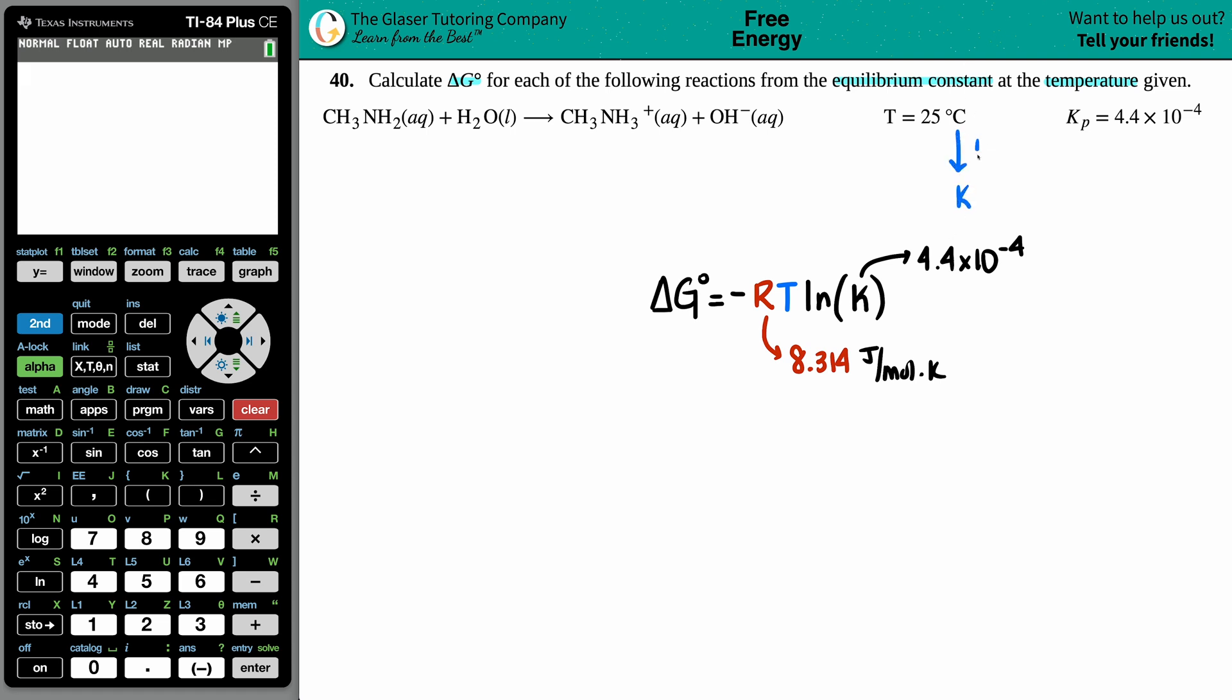Celsius to Kelvin, that's plus 273. More specifically, it's plus 273.15. So, room temp, it's like ingrained in my mind, it's 298. So, if I add those two together, I get 298.15, and that's the number that's going into my temperature.